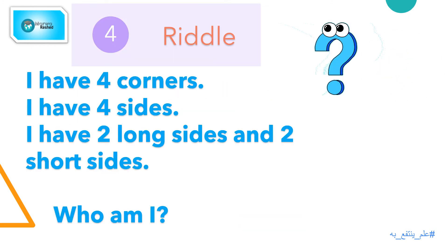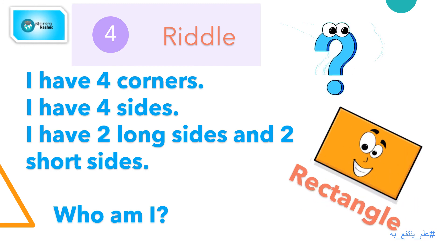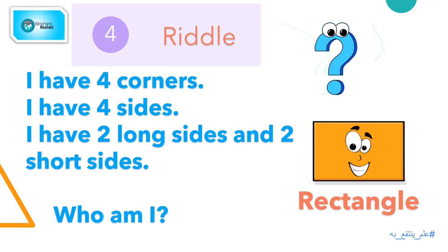Number 4, and the last one. I have four corners. I have two long sides and two short sides. Who am I? You're right! I'm the rectangle shape.